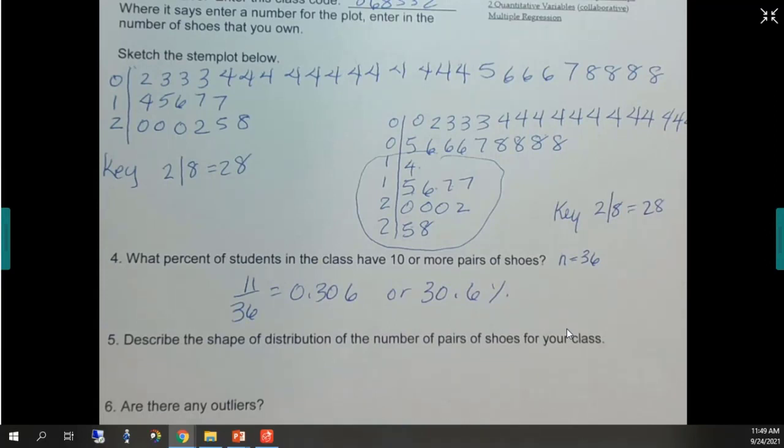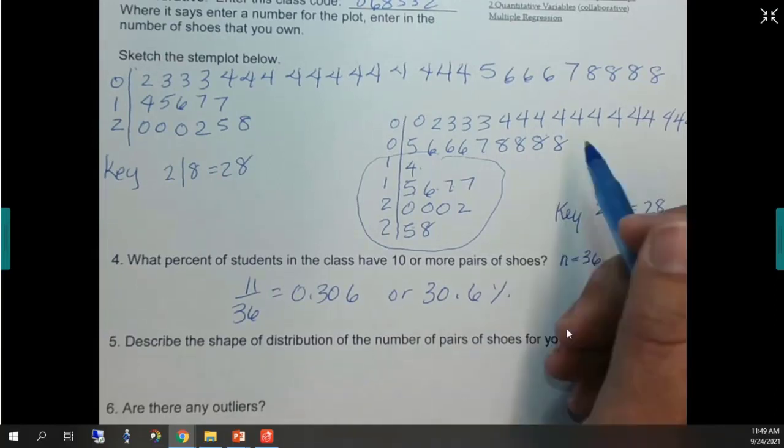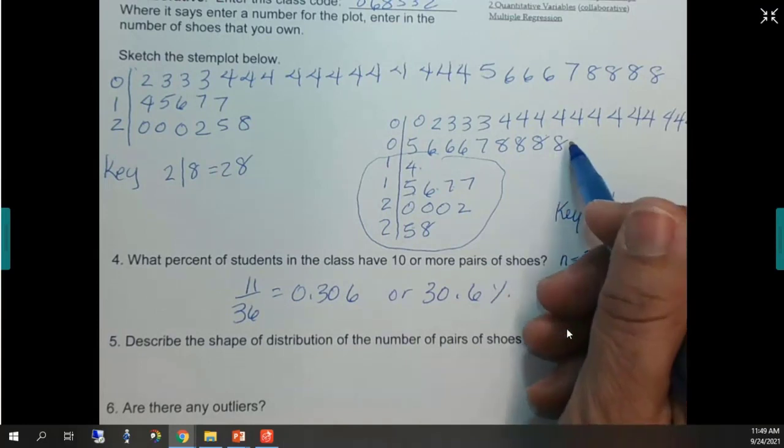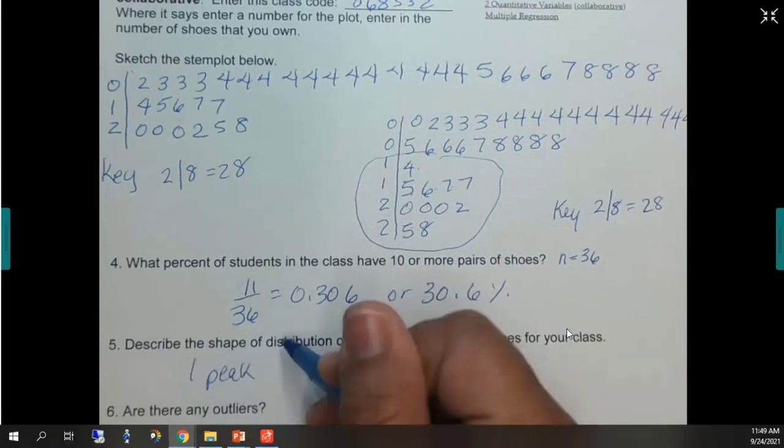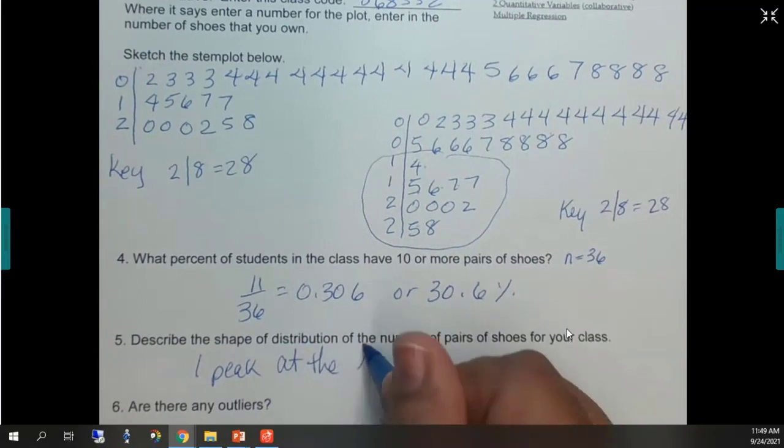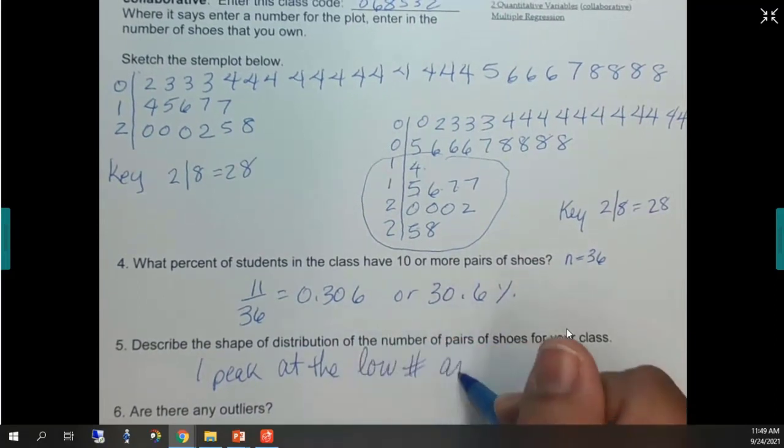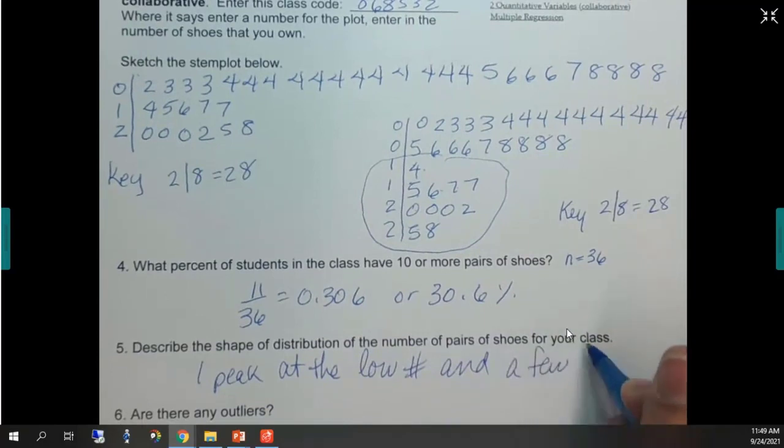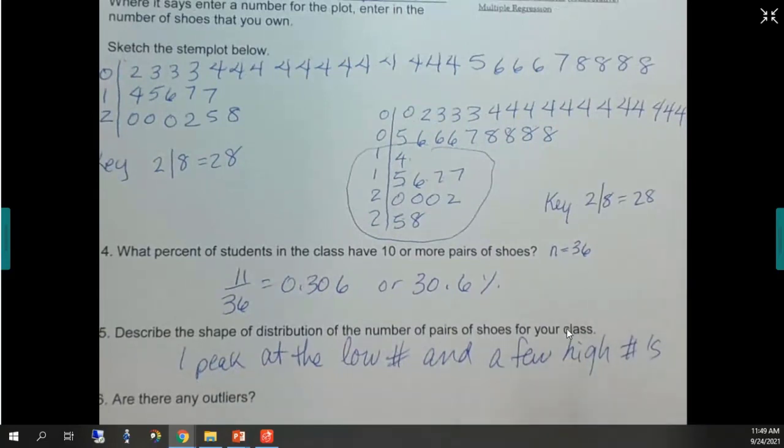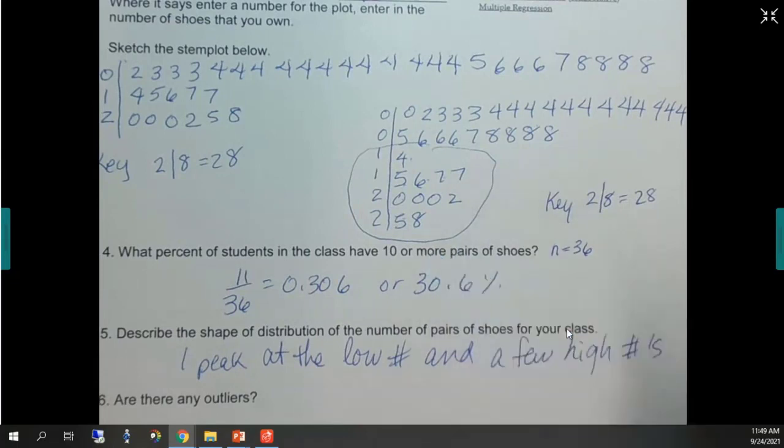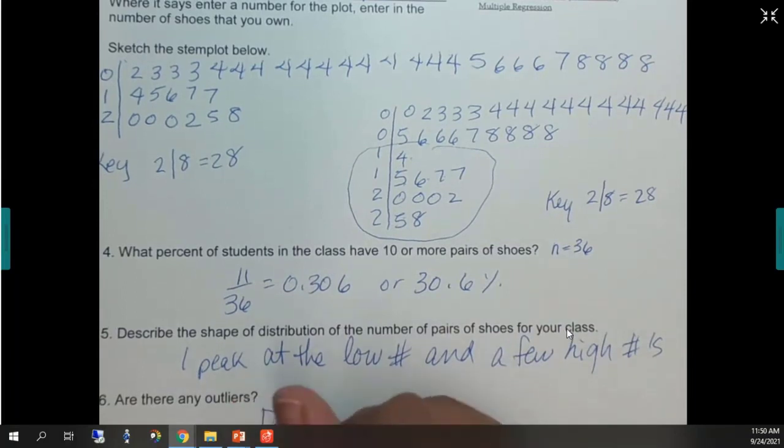Now I'm pretty sure I haven't taught you skew yet. Have I? I haven't mentioned it. That comes up later. So we're going to keep it very simple. We tend to have, it doesn't matter which distribution you look at. It looks like we kind of have one peak at the low numbers and a few high numbers. Would you agree with that? Now I haven't taught you outliers. But as far as I can tell, if you were to guess if they're outliers. Not really. It doesn't look like it.